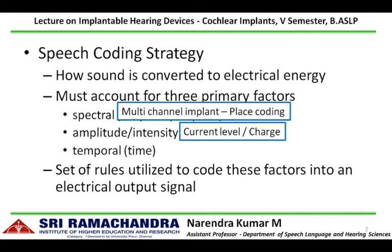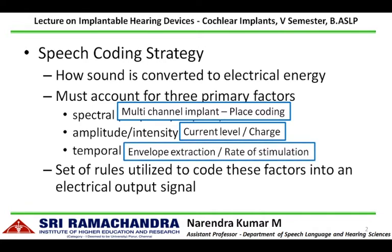The amplitude information is controlled by the charge level — the electrical energy level delivered to each electrode contact area. If the electrode contact represents a soft signal, lower charge is delivered; if it is a loud, high-intensity signal, the charge is going to be high. The temporal information is extracted from envelope extraction, showing how the signal varies across time.